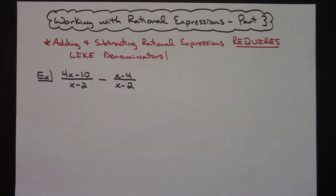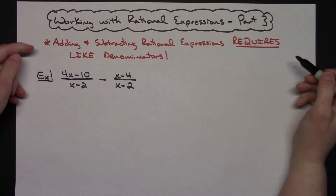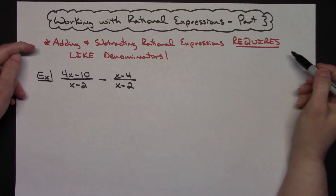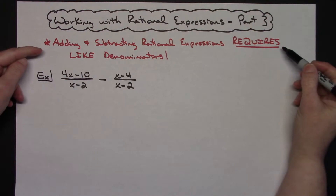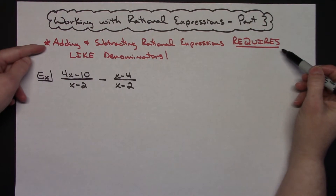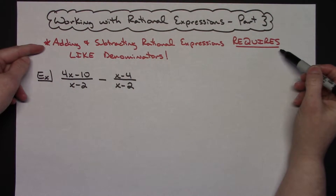The first thing to remember when dealing with rational expressions and you're trying to add and subtract them is that you have to have like denominators. Adding and subtracting rational expressions requires like denominators.